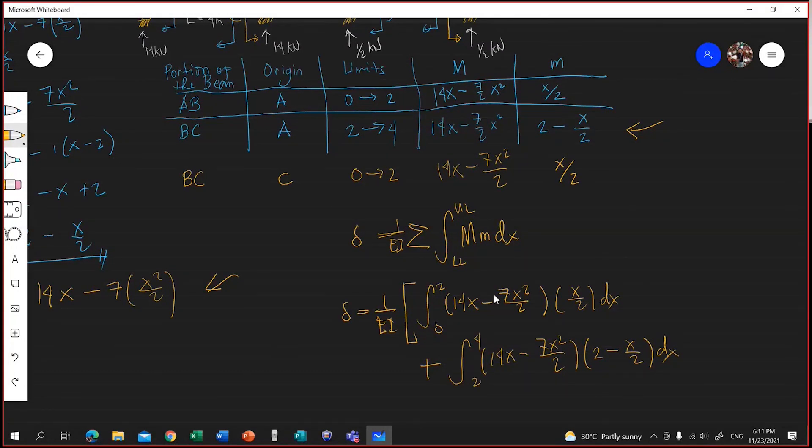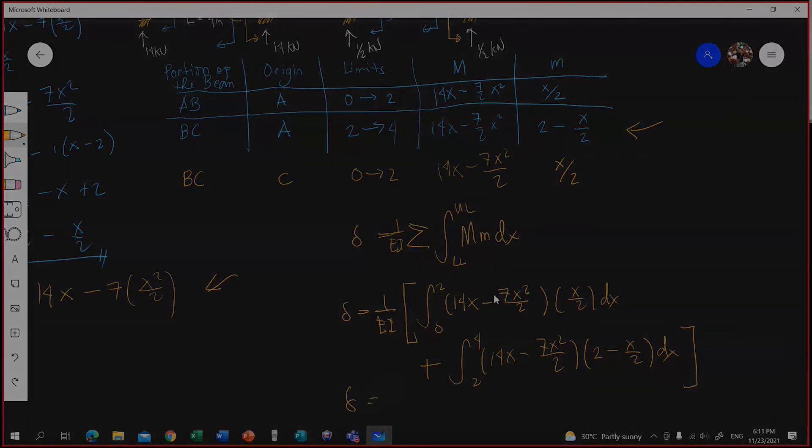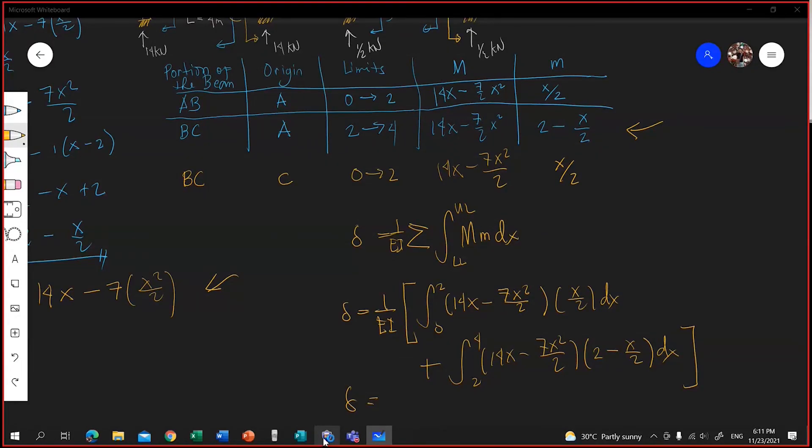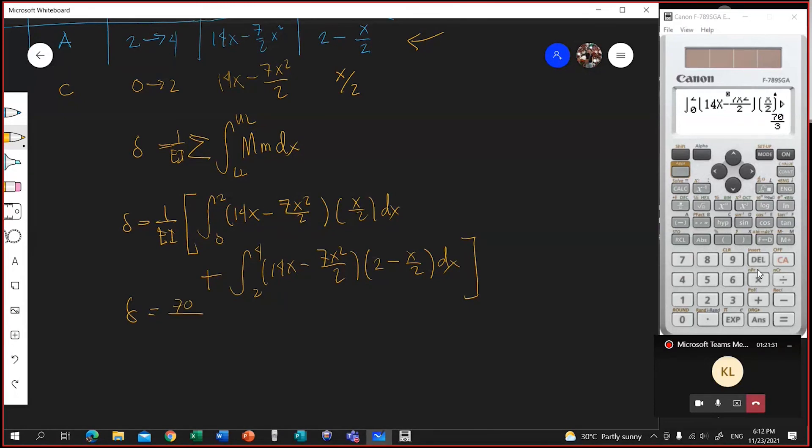What's the value of the integral, the deflection? The result is 70 over 3 EI. That's the result, 70 over 3 EI.